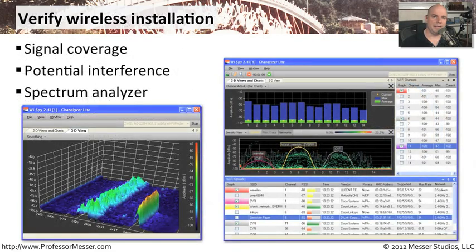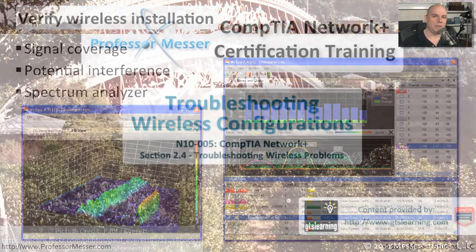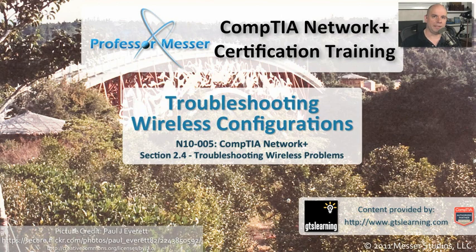Once your wireless network is in place, you may want to confirm that some of these configuration settings are working as expected. You can look at your signal coverage and determine if the configuration settings for a particular frequency are going to work well in this environment. You can see if there's any interference so that you might want to change the configuration of your access point. Using something like one of these spectrum analyzers can give you a graphical view of exactly what's going on, ensuring that you've got exactly the right configuration on your access point.